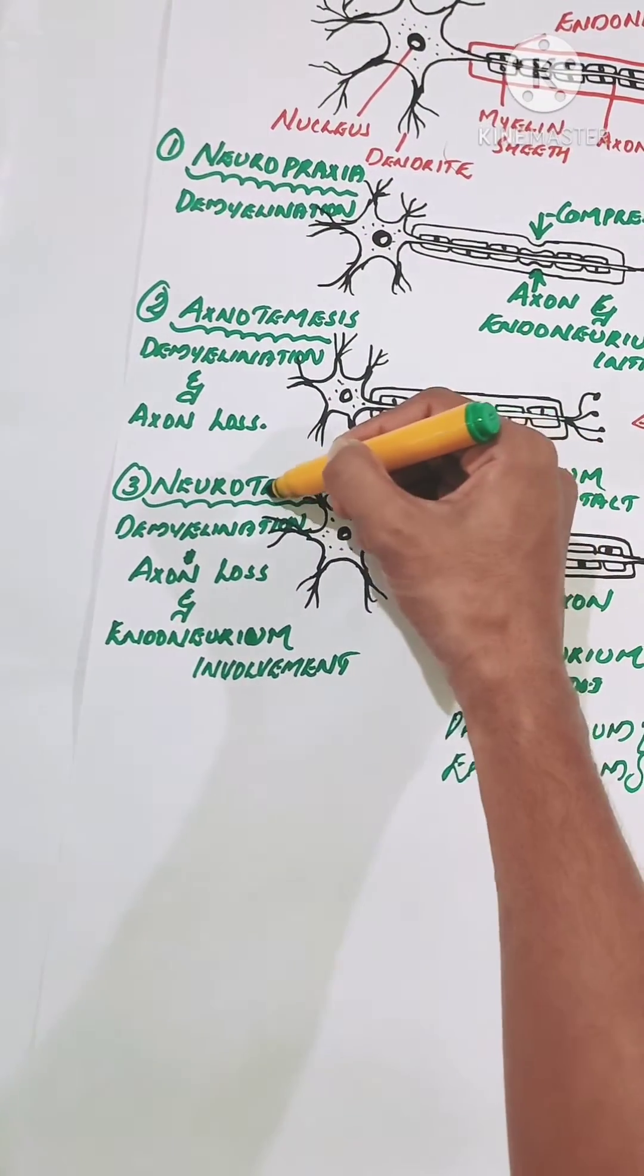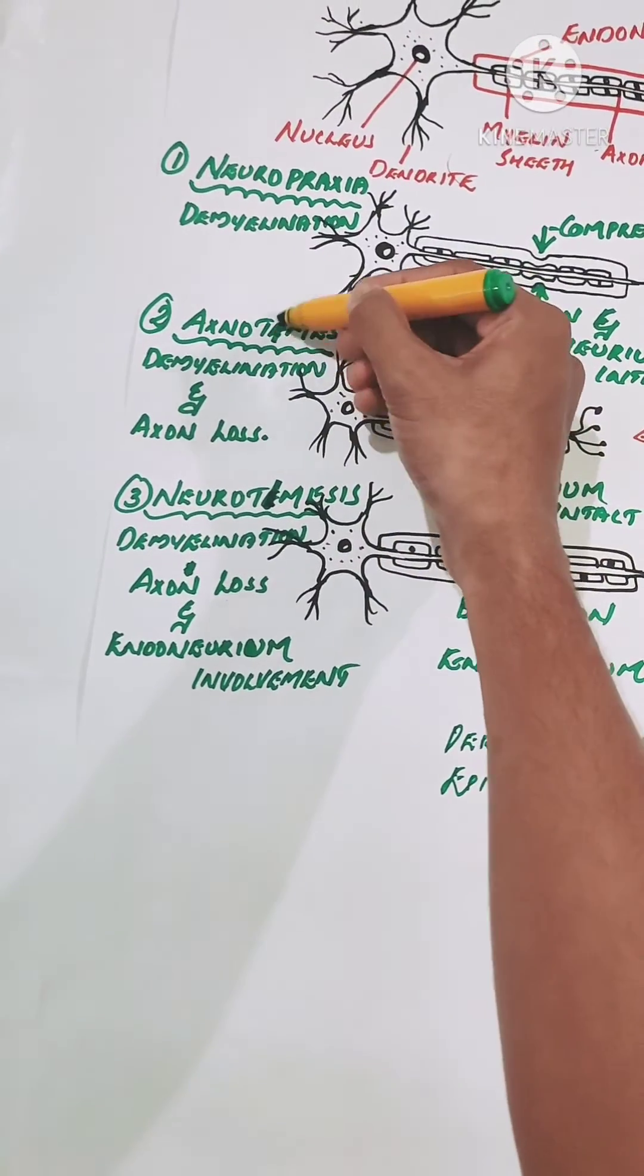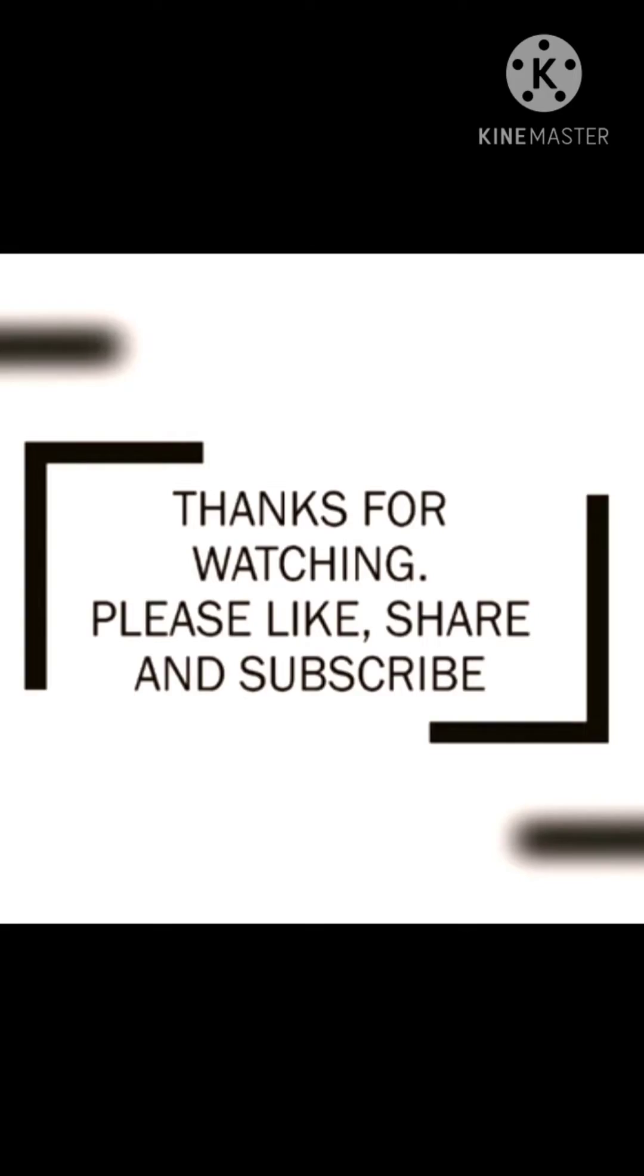I just made a spelling mistake in axonotemesis and neurotemesis. I hope you all understood the classification of peripheral nerve injuries. Please like, share, and subscribe to our channel for more videos.